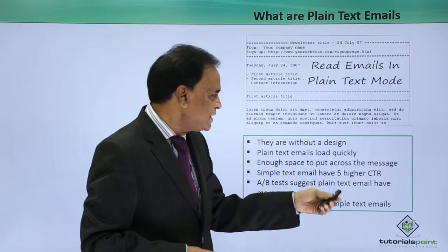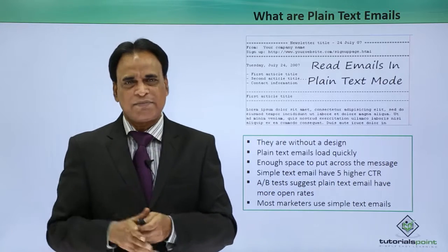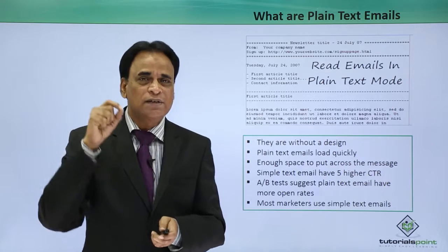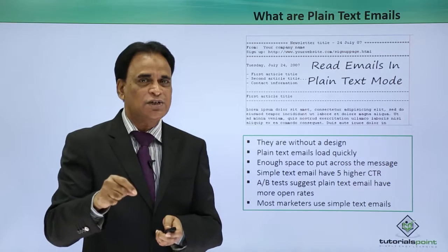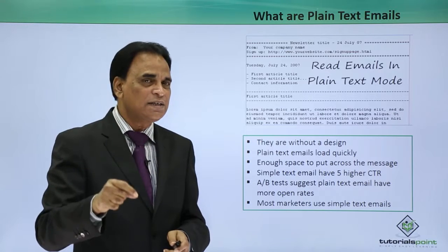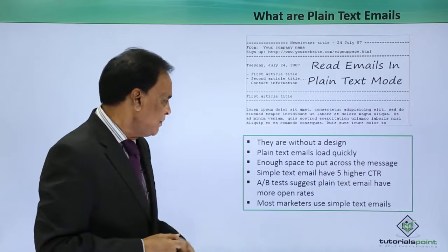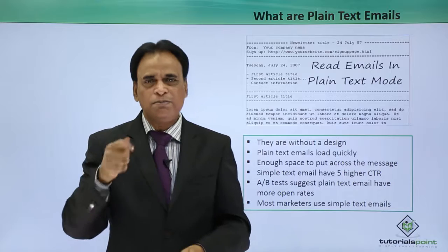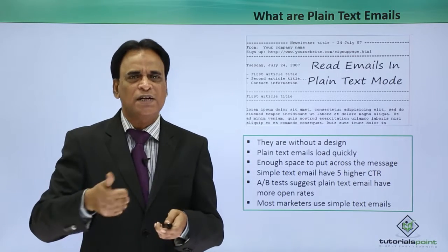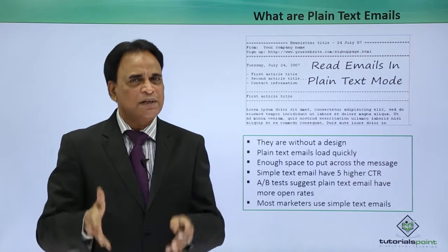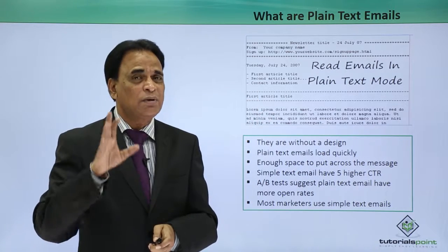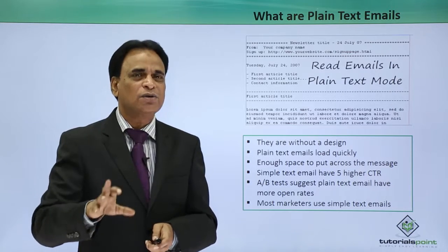A/B testing suggests that plain text emails have more open rates. Professionals have tested it and research has shown that text based emails have a higher CTR and higher open rates. Most marketers use simple text based emails. You may have hyperlinks to your websites, blogs, or landing pages, but text based emails are very important for achieving a higher CTR and higher open rate.